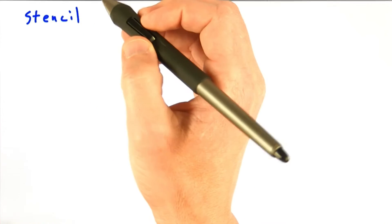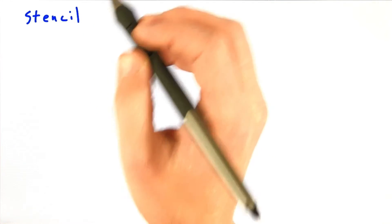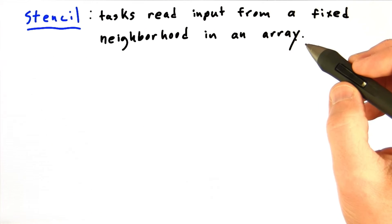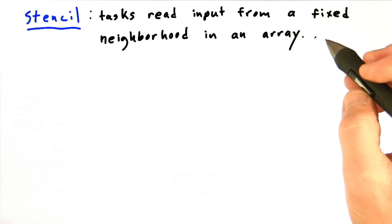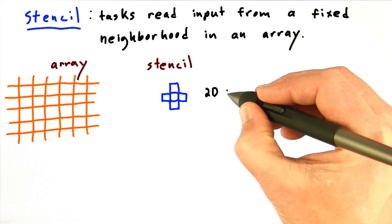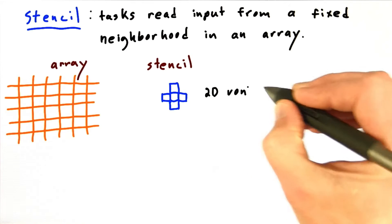The image blurring example we've been using illustrates another important communication pattern called stencil. Stencil codes update each element in an array using neighboring array elements in a fixed pattern called the stencil. This is the stencil pattern we saw before. It's technically known as a 2D von Neumann stencil.